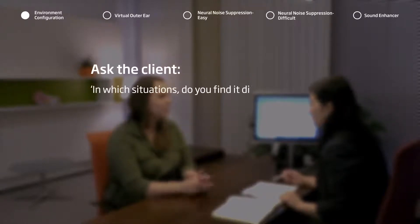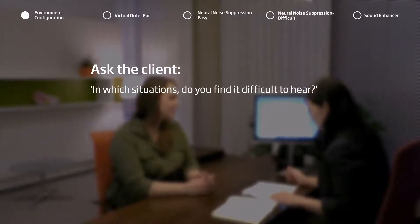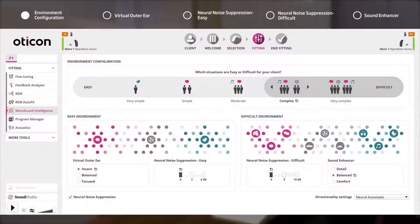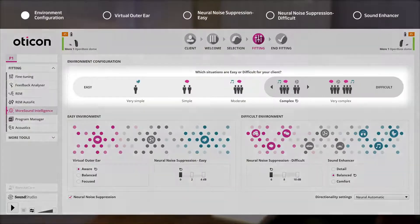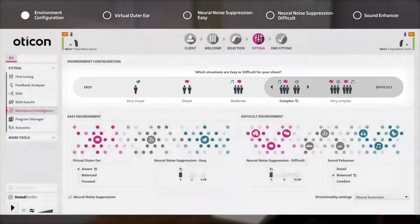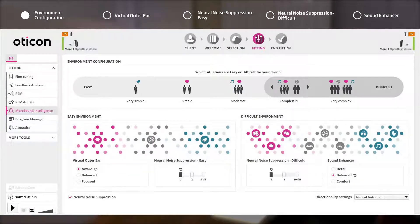There are five elements in the More Sound Intelligence fitting tool. As the difficulty a user experiences in hearing varies from individual to individual, Environment Configuration allows the hearing care professional to pinpoint exactly the kind of environment the user will begin to experience difficulty.